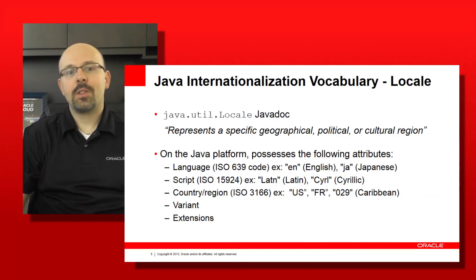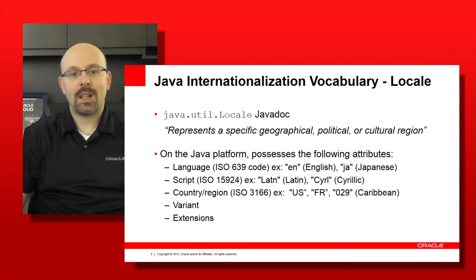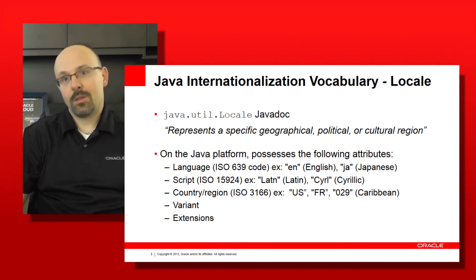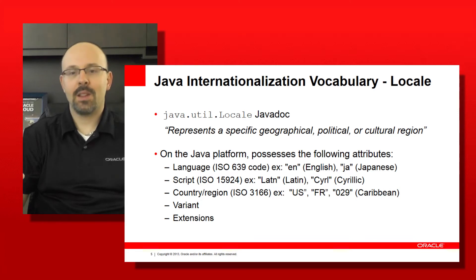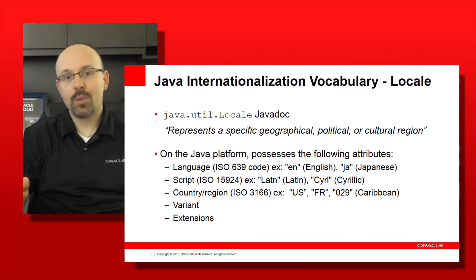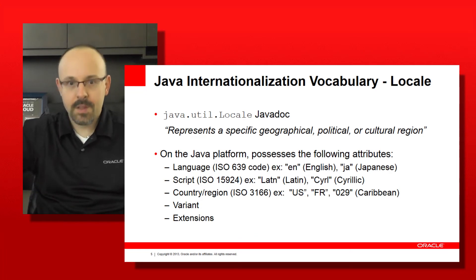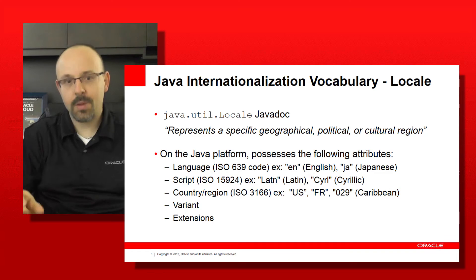So in the context of the Java platform, what is a locale? The java.util.Locale class states that a locale represents a specific geographical, political, or cultural region. In Java Standard Edition, and by extension Java Enterprise Edition, a locale possesses several attributes, and those attributes make up the code for that locale. Each attribute has a specific code, and together all those codes make up the code for a very specific locale.